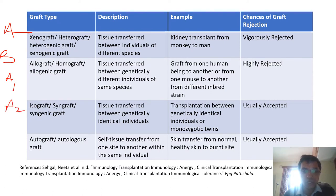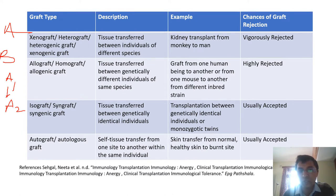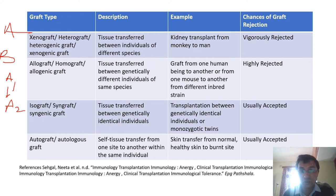The second type is allograft. Here the species is the same but the individuals are different. Individual A1 provides tissues to individual A2 of the same species. This type of graft is known as allograft, homograft, or allogeneic graft. An example is grafting from one human being to another, or one mouse to another. This is also highly rejected because the genomic makeup of the individuals differs, and the immune system recognizes the graft as non-self and produces antibodies that reject it.